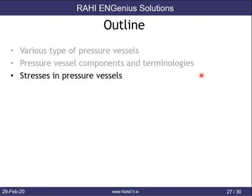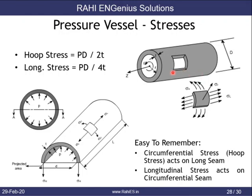A pressure vessel has three different stresses: hoop stress (or circumferential stress), which acts in the circumferential direction; longitudinal stress, which acts along the vessel's axis; and radial stress, which acts radially. Using thin shell theory, we ignore the radial stress. The hoop stress equation is pd/2t, and the longitudinal stress equation is pd/4t, where p is the pressure, d is the diameter, and t is the thickness.